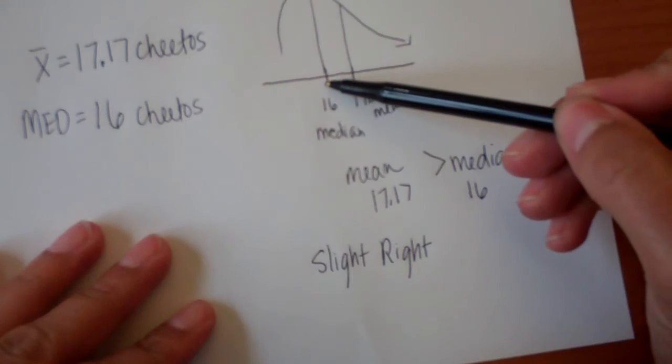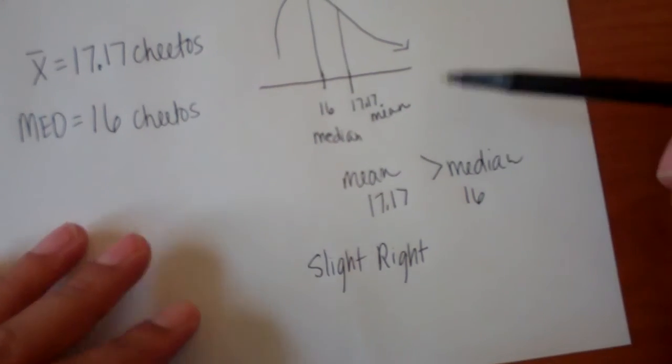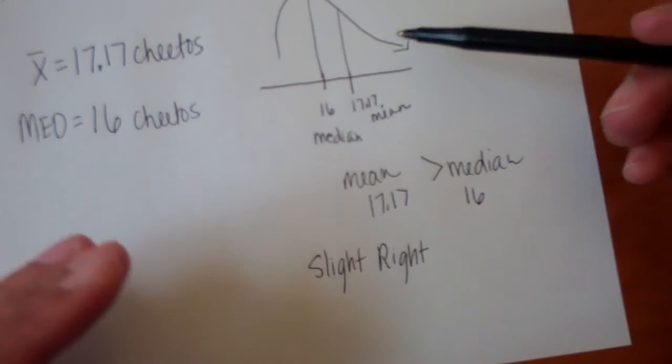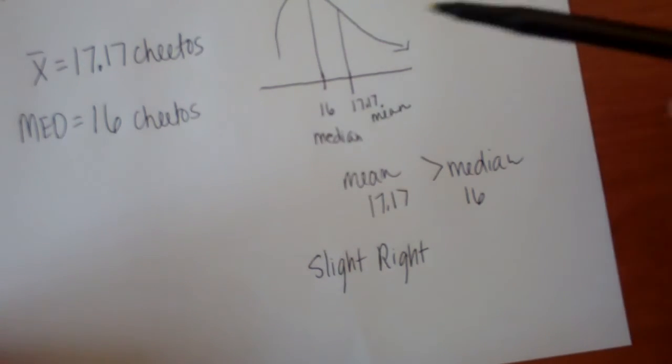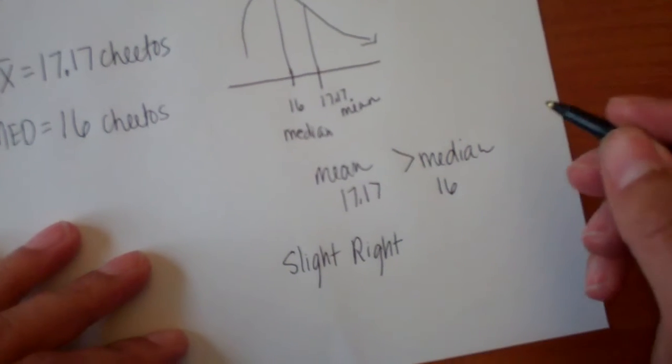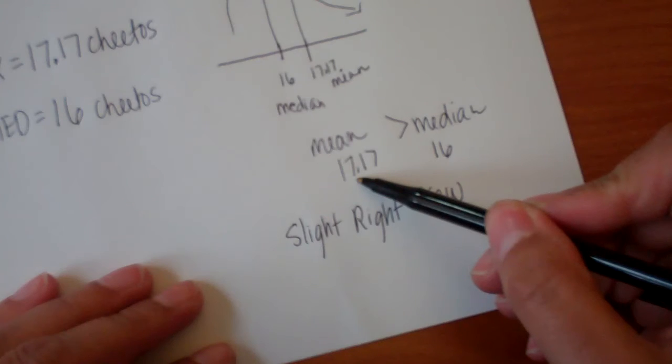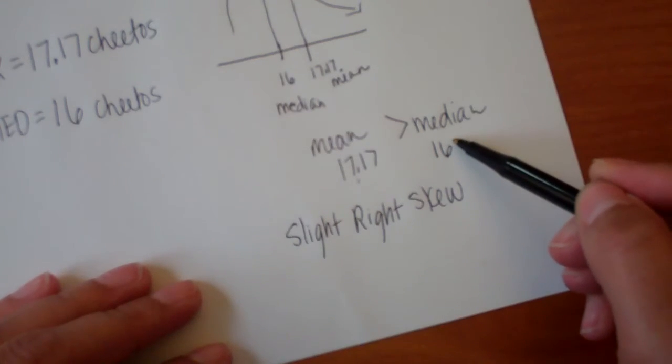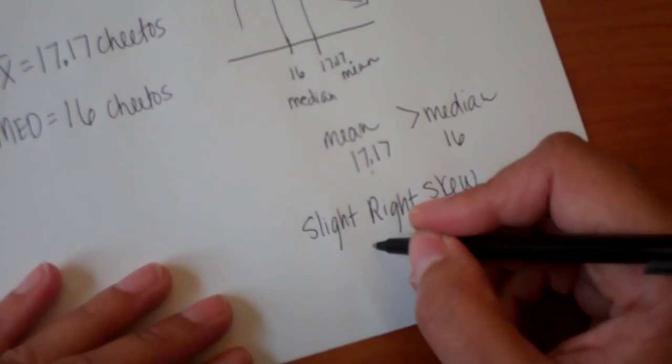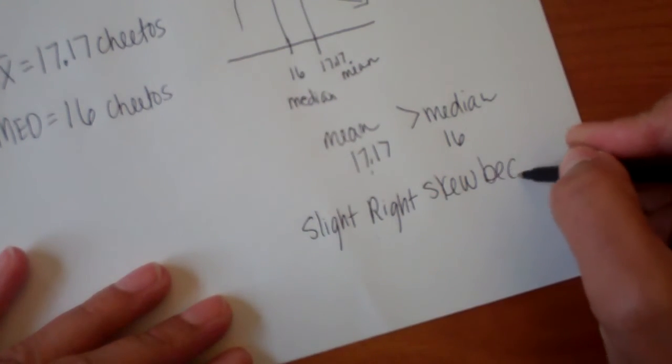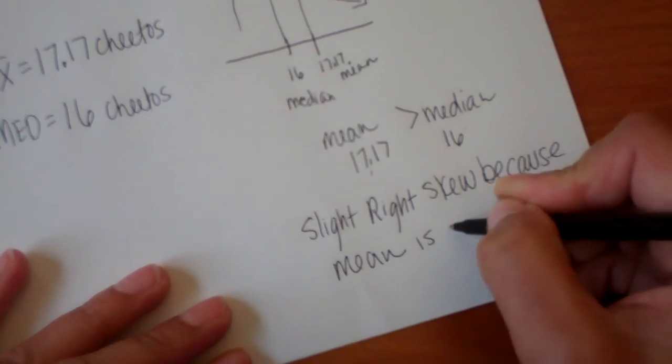And the reason I say slight right skew is because we only have a total of 17 bags. That was our n. And I'm wondering if we got another random sample of bags, maybe even more like 34, what that would look like. I wonder if it would be more symmetric. So slight right skew because our mean of 17.17 is greater than our median of 16, and the tail is going to be tending more towards the right.